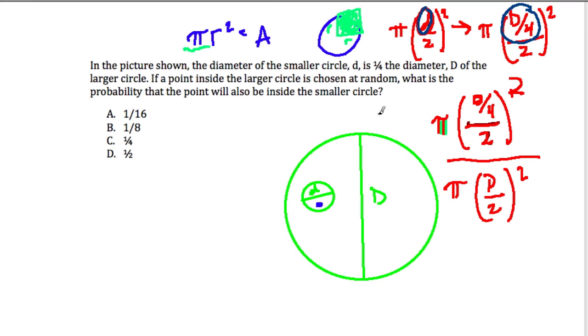So how do we evaluate this? Well, let's start with the denominator over here. D over 2 squared, that's just D squared, big D squared, over 4 times pi.